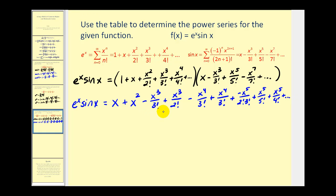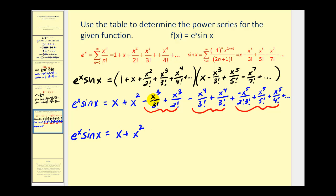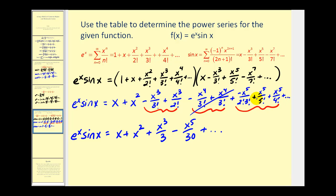Let's group the terms by degree and simplify. The degree three terms are negative x cubed over six plus x cubed over two, which simplifies to x cubed over three. The degree four terms cancel each other out. The degree five terms combine to give negative x to the fifth over thirty. So e to the x times sine x equals x plus x squared plus x cubed over three minus x to the fifth over thirty, and so on. If we needed more terms, we'd continue finding products of the same degree.